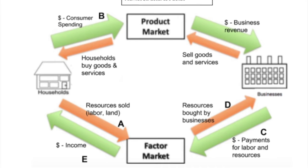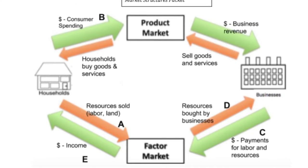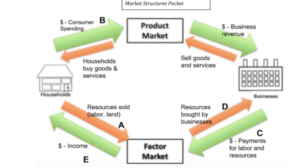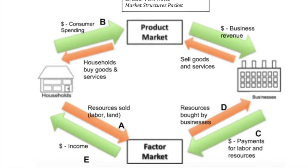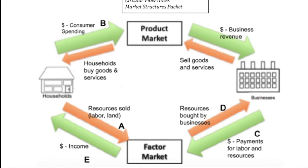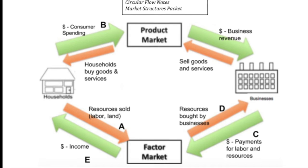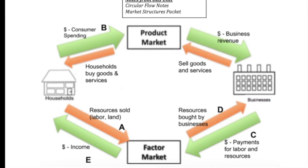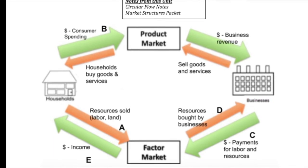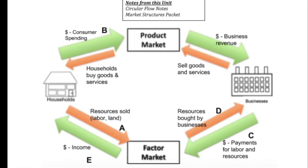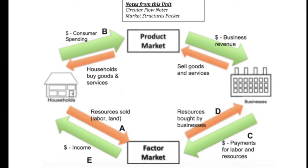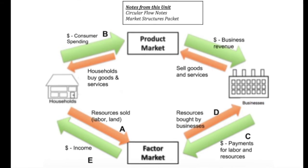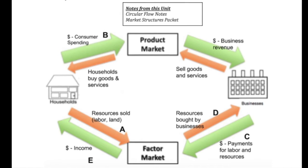Number six says to label what is happening to the flow of money and resources next to each arrow. It flows like this: from households, you have expenditures to the product market. At the product market, that turns into business revenue for businesses. The businesses then use that to pay for wages, interest, and net profits to the factor market, which then becomes income for the households. Inside arrows go the reverse direction: households sell their productive resources to the factor market, which are then used as resources for businesses, which then make goods and services for the product market, and those products are then bought by households.